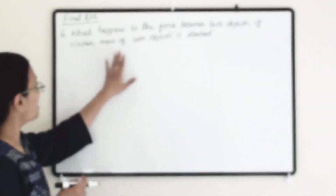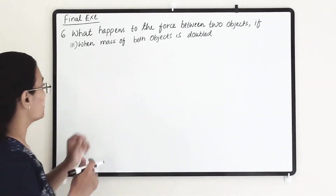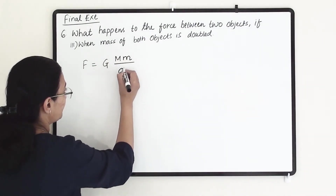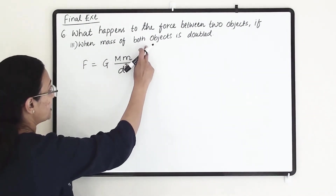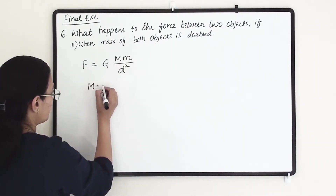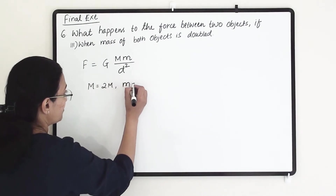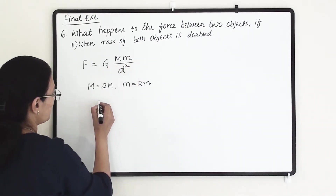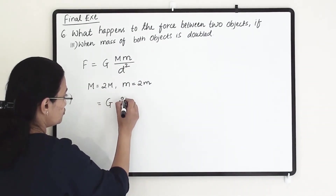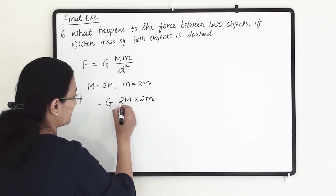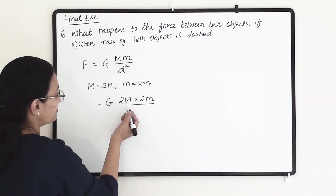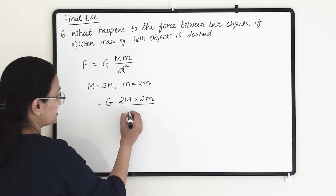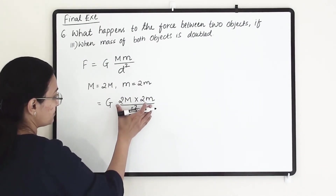The third question is when the mass of both objects is doubled. Our force equals G times capital M times small m divided by d square. Now we make both masses double, so capital M becomes 2M and small m becomes 2m. Substituting both values, we get G times 2M times 2m divided by d square.